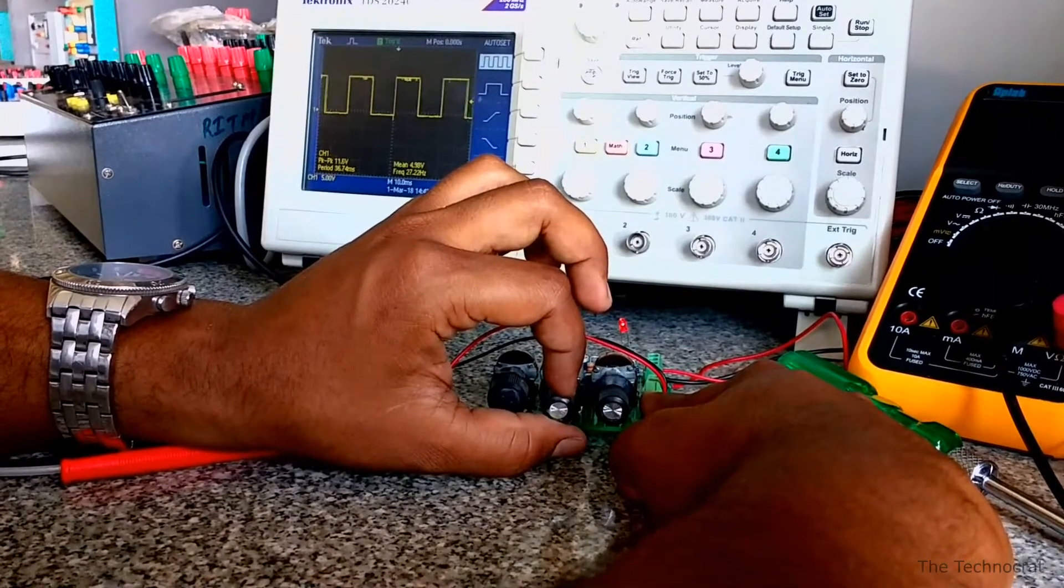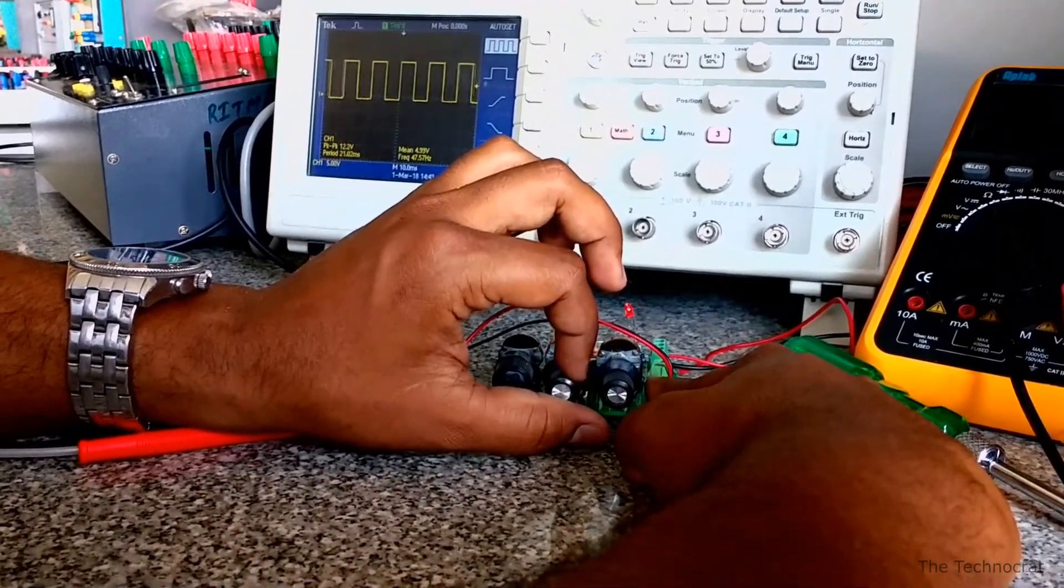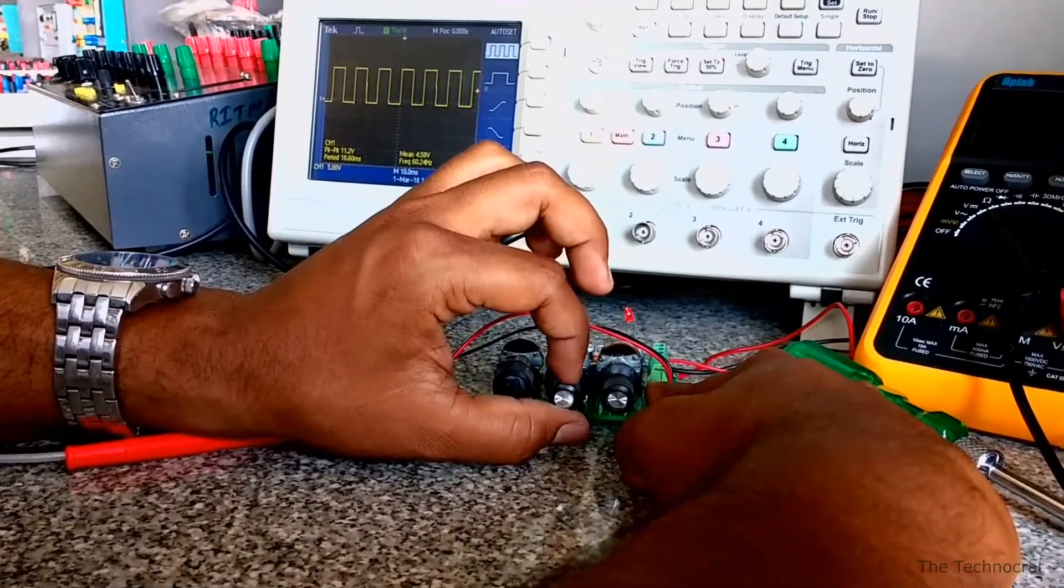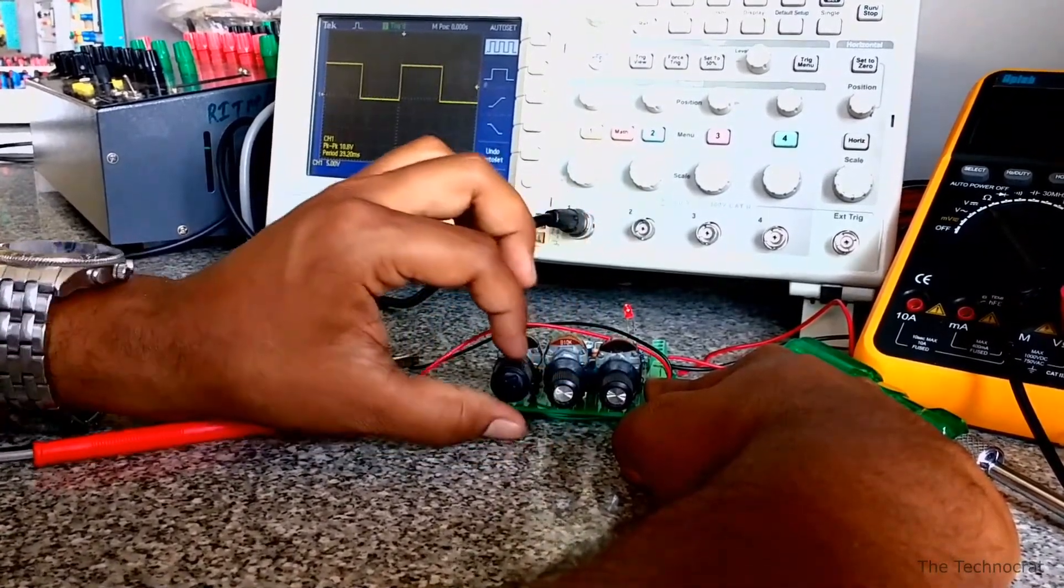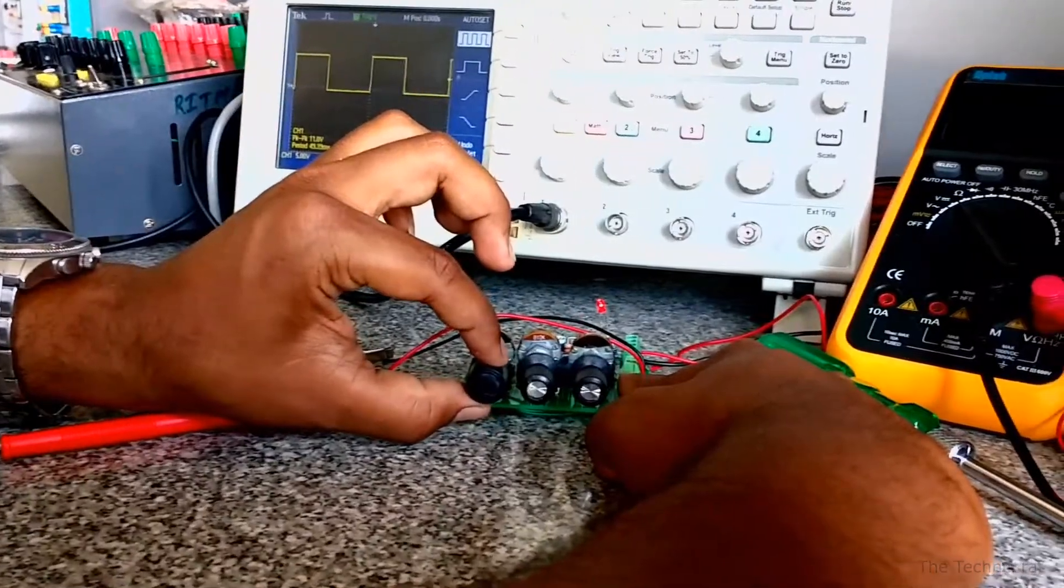The only downside is that you will need an oscilloscope to visualize the waveforms. So in the coming videos let's build a circuit to measure the frequency and amplitude of the signals with a display for convenient use of this signal generator.